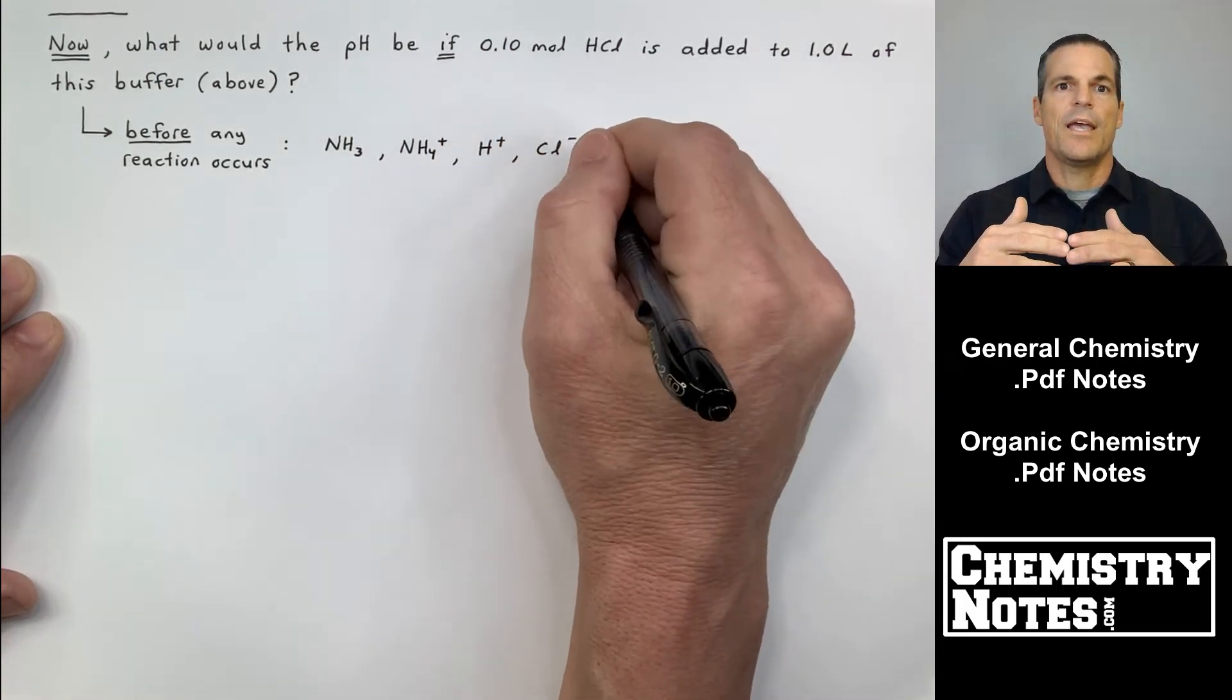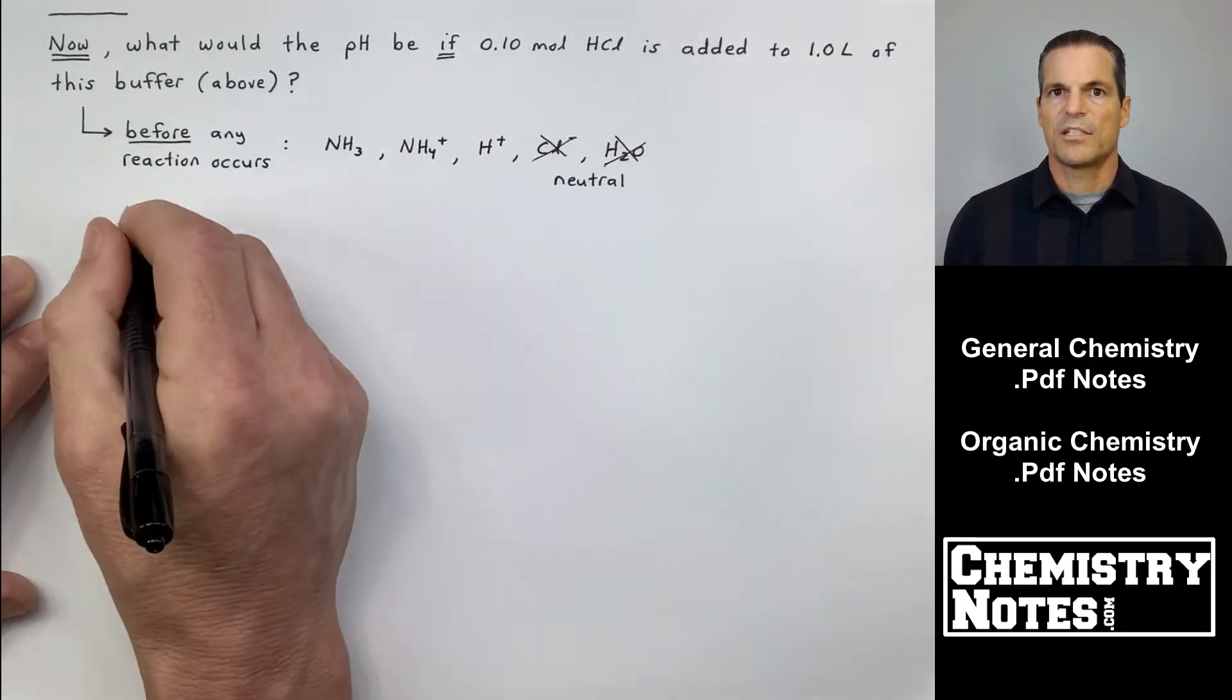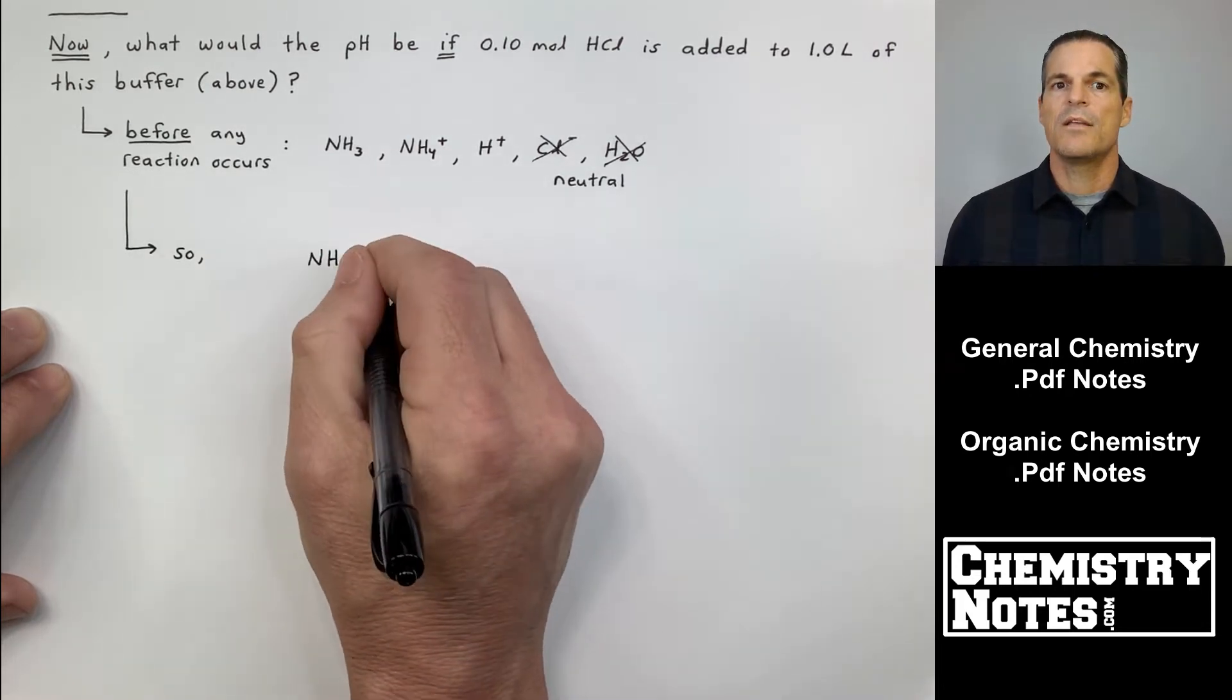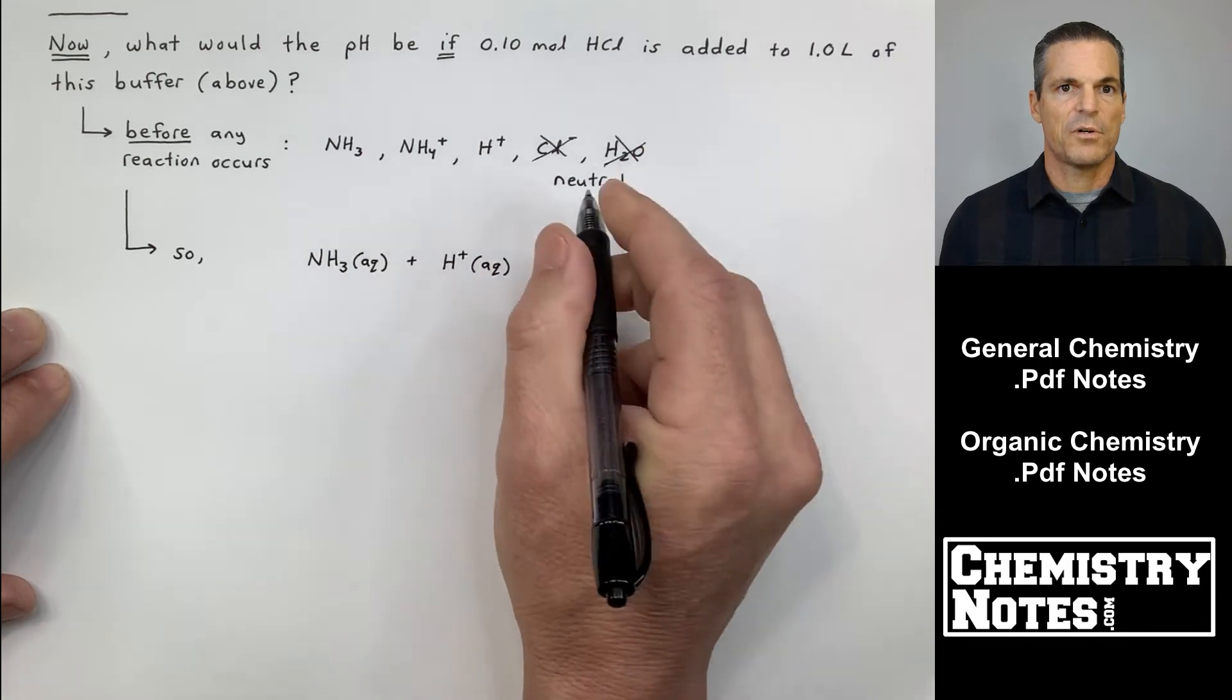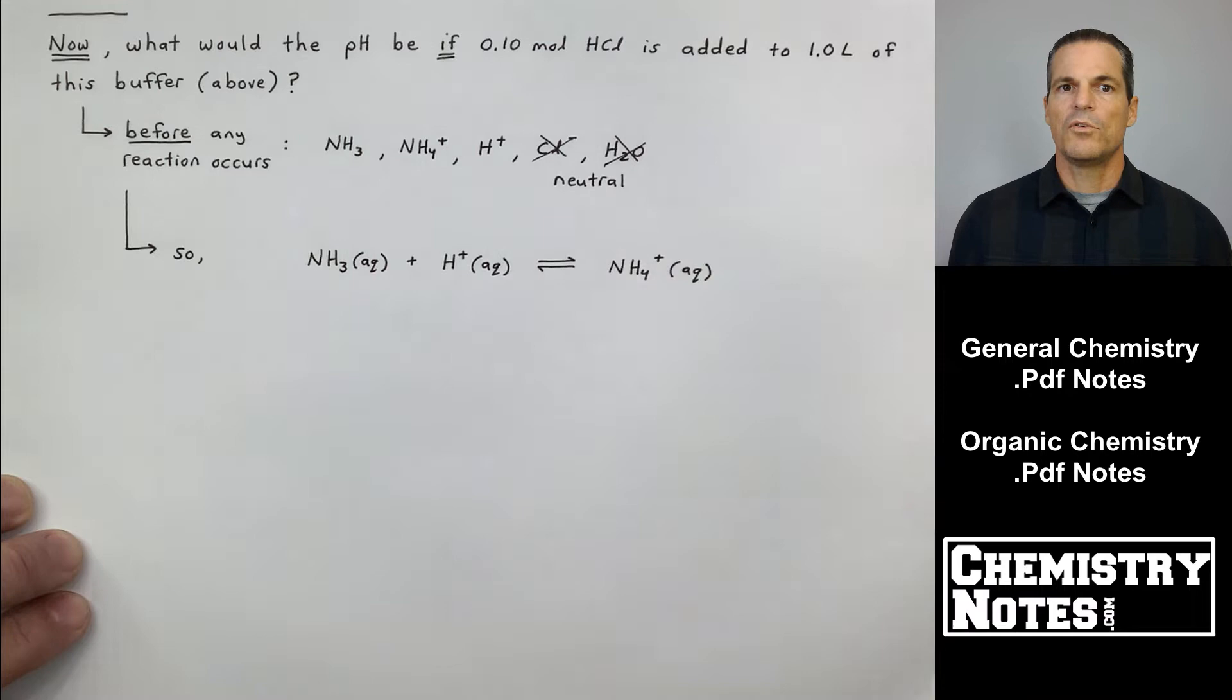The first step is to deal with the before and after of the addition of the OH minus in the last example and the H plus in this example. And then you just move on to number two, which is the ICE expression again. So before any reaction occurs, I have NH3, NH4 plus, H plus from the hydrochloric acid, Cl minus from hydrochloric acid, and of course water.